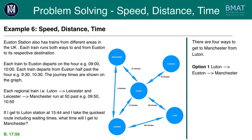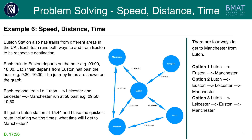There are actually four ways to get to Manchester from Luton. Option one is going from Luton to Euston to Manchester. Option two is going from Luton to Euston to Leicester to Manchester. Option three is going from Luton to Leicester then to Euston then to Manchester. Option four is going from Luton to Leicester to Manchester. Looking at option three, it's clearly not feasible as it takes far longer than the other trains, even if they involve a waiting time of up to an hour. So we can rule out option three.